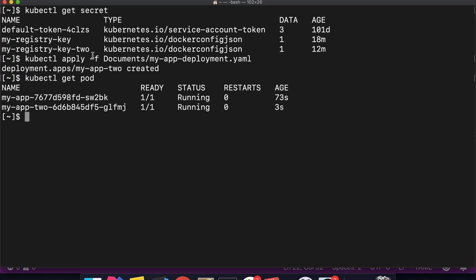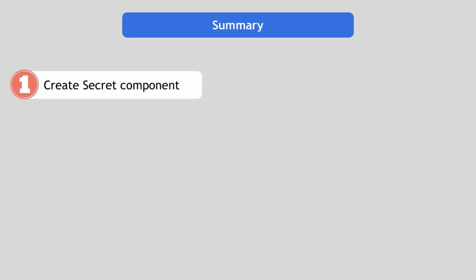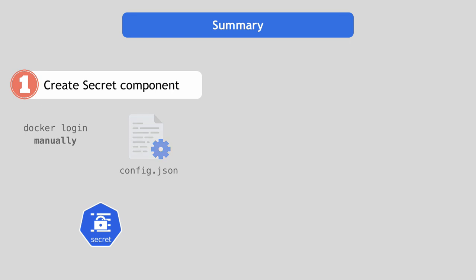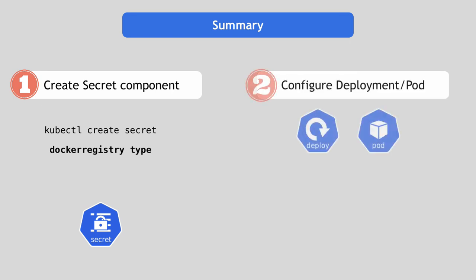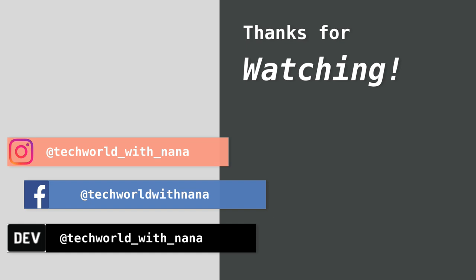To recap: to configure your cluster to pull from a private registry, you create a secret — either by running Docker login and using the generated config.json to create the secret, or in one step using kubectl create secret docker-registry providing all credentials. Then in the second step, you reference that secret in the deployment or any other component via imagePullSecrets. I hope this was helpful. If you want to see more Kubernetes videos, subscribe to my channel and follow my tutorials. Thank you for watching.